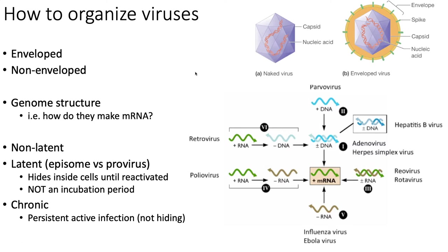Genomes vary quite a bit. The Baltimore classification chart is what we typically use — based on what your genetic material is, it tells you what kind of classification you are, and gives you good ideas about how their life cycle might work. We can also organize by whether a virus causes a latent infection or a normal infection. Most viruses are not latent. HIV and herpes viruses cause latency — they're hiding inside your cells. A chronic infection, like hepatitis C or uncontrolled HIV, is a regular infection happening at a really low level.